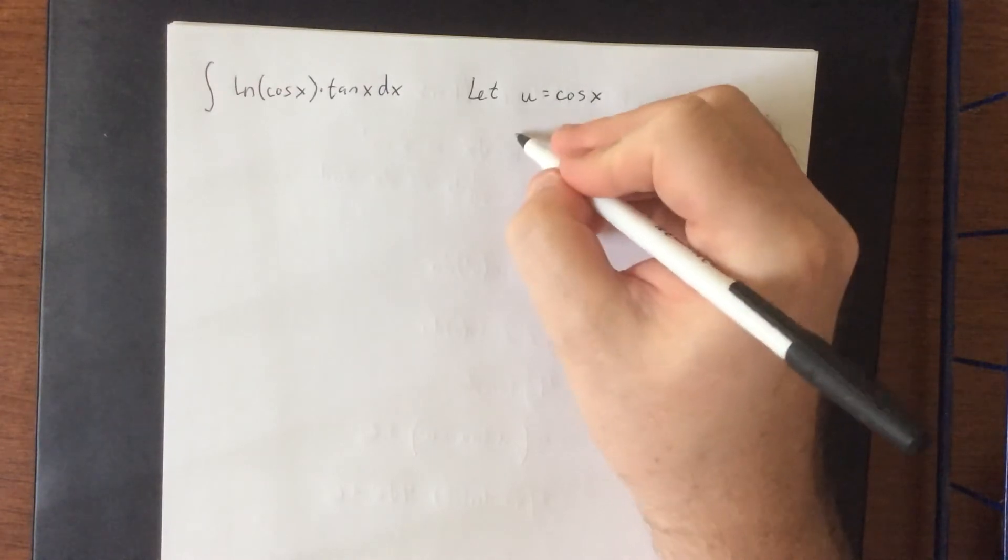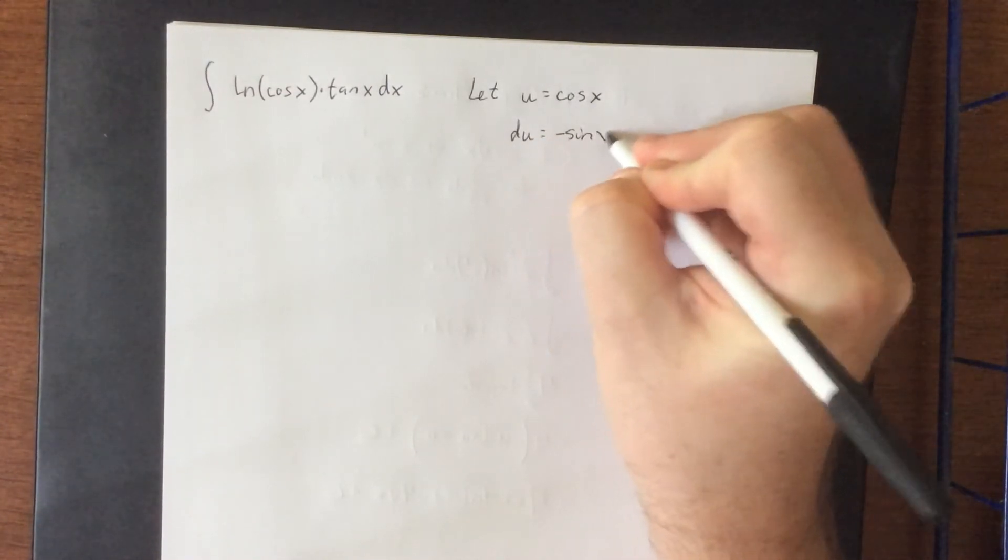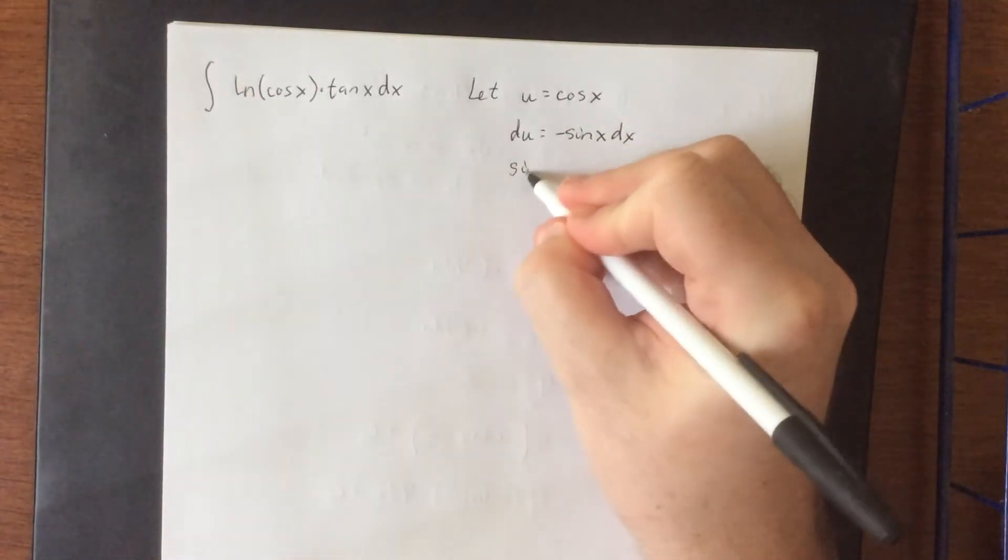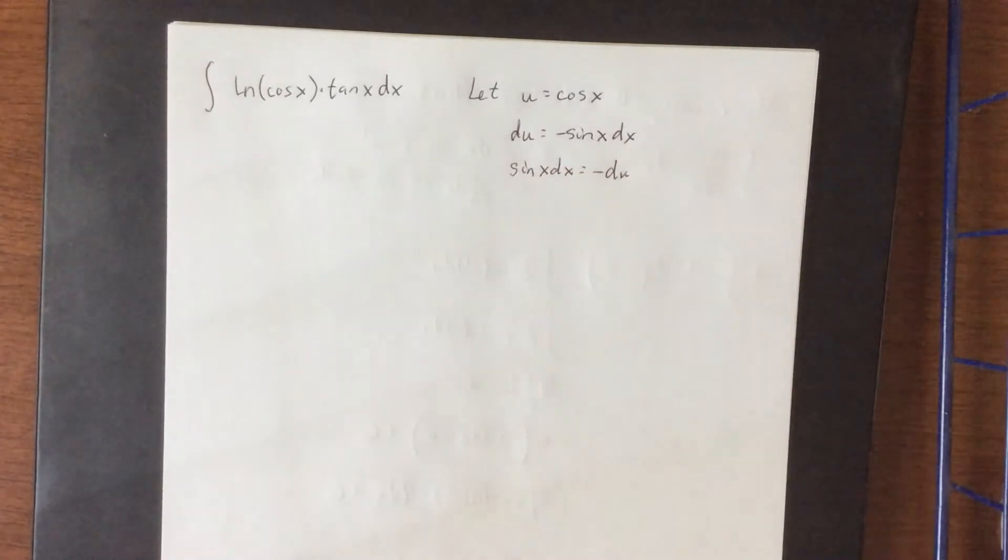Now if we let u be equal to the cosine of x, then du would be equal to the negative sine of x times dx. Or equivalently, the sine of x times dx would be equal to negative du.